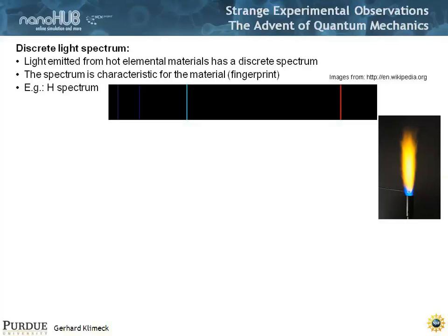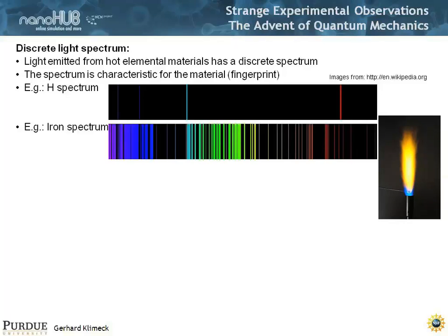The hydrogen spectrum, for example, is very different from the iron spectrum. This might be very natural to you by now, but it was very puzzling to people. And there was no theory that really explained why that is and where that comes from.